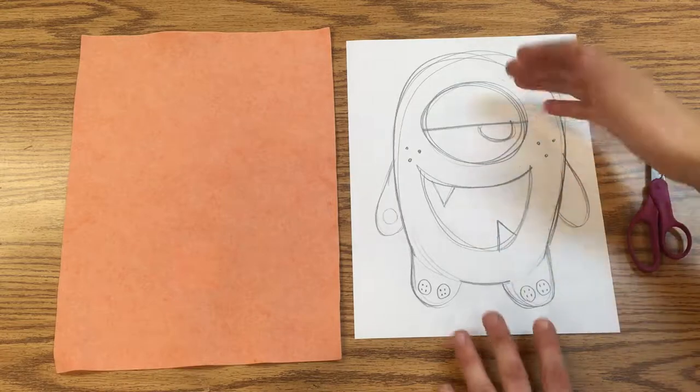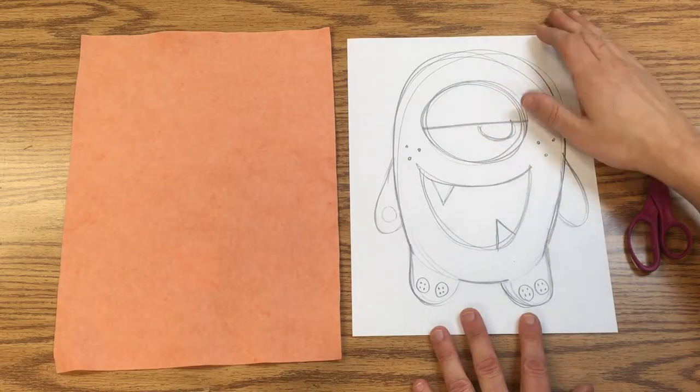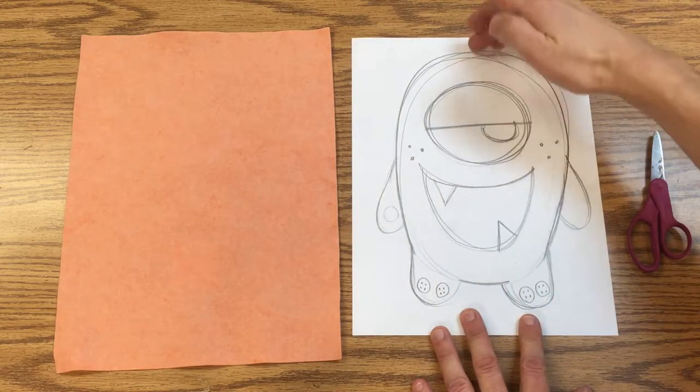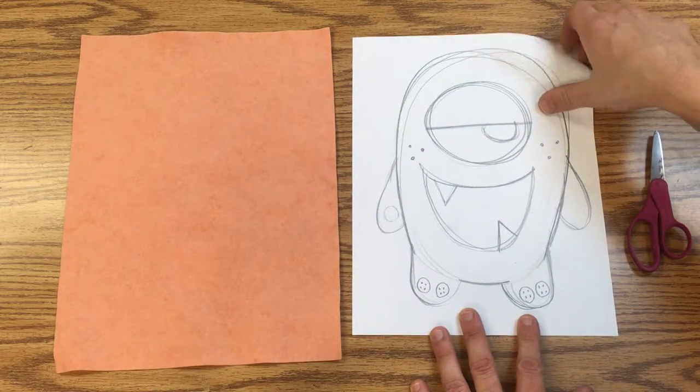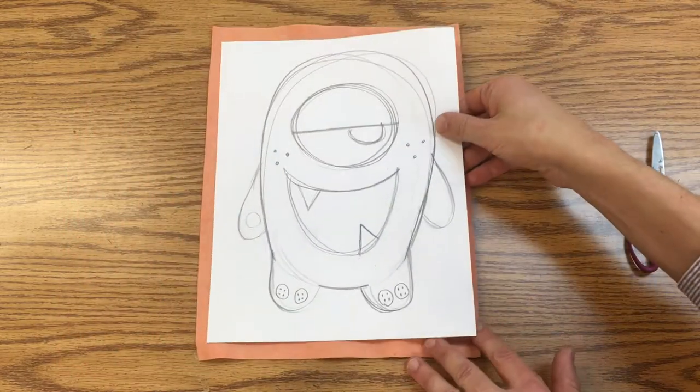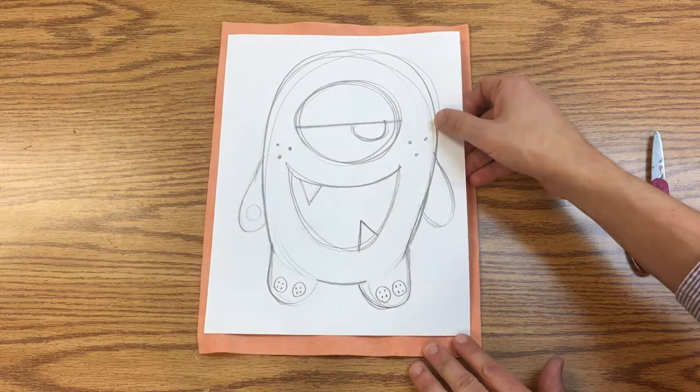I've made my final design on a large piece of paper and you can see that it goes from the top to the bottom both ways to the sides as well, so it's about the same size as my felt.